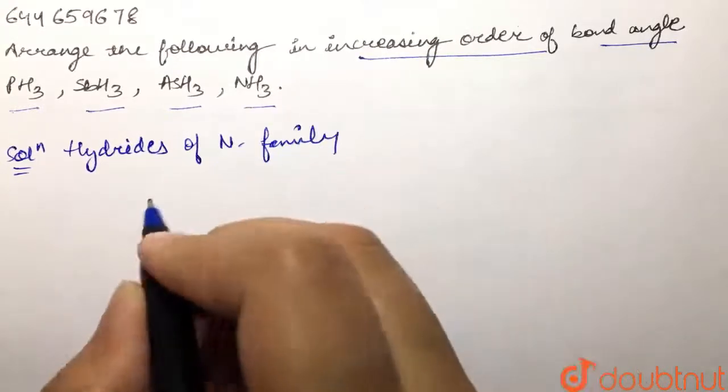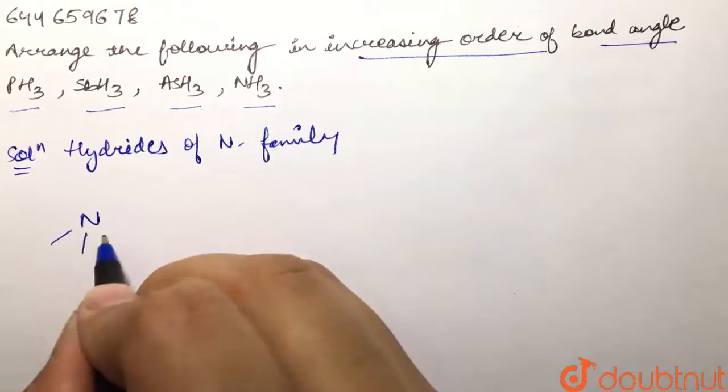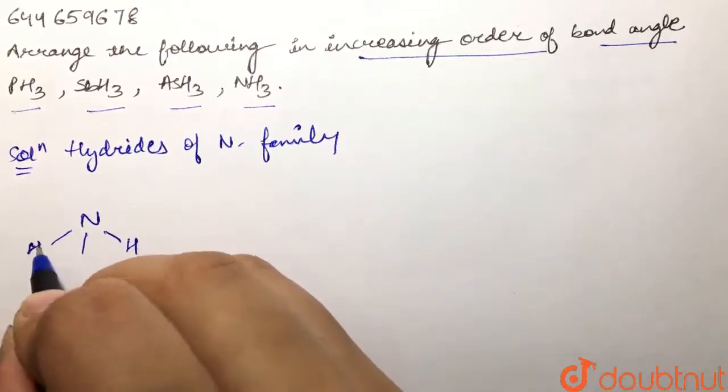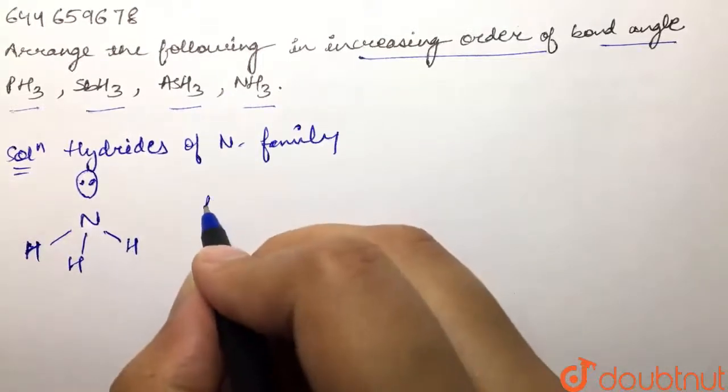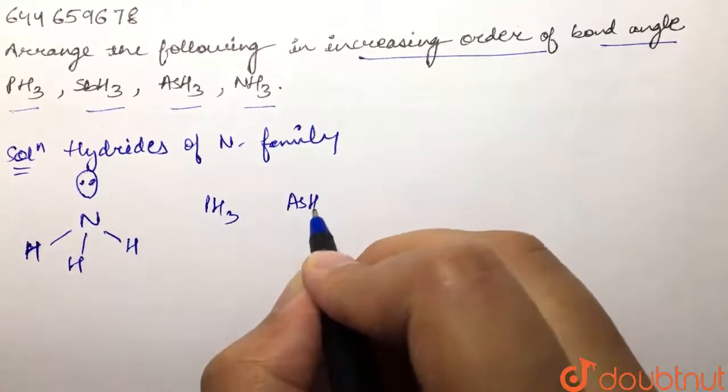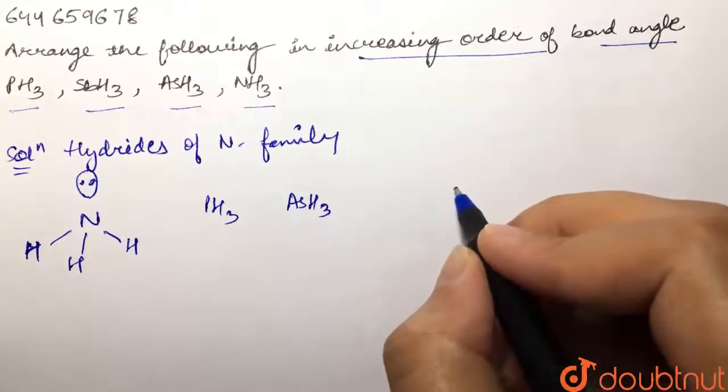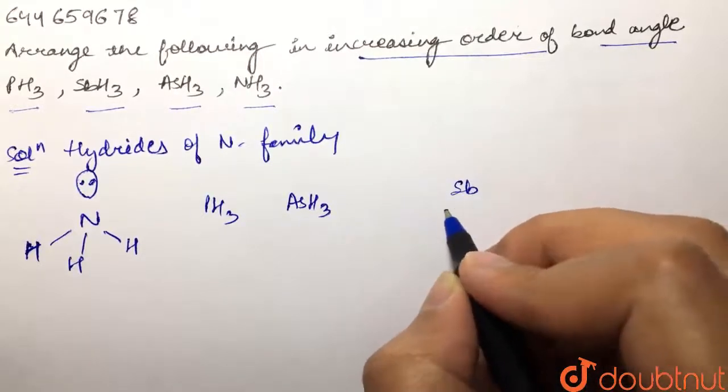If we draw ammonia first, NH3, we have one lone pair and three bond pairs with hydrogen. Then we have PH3, then we have AsH3 as we are moving down the group, then at last we have SbH3.